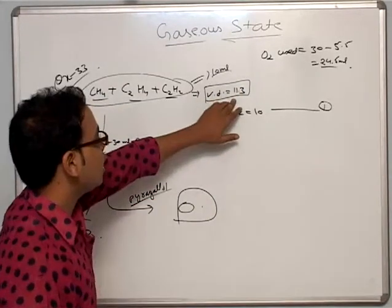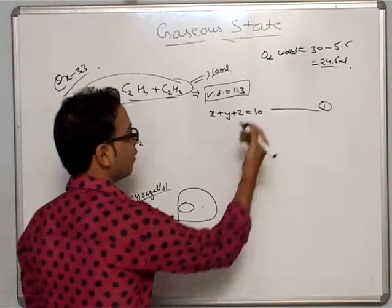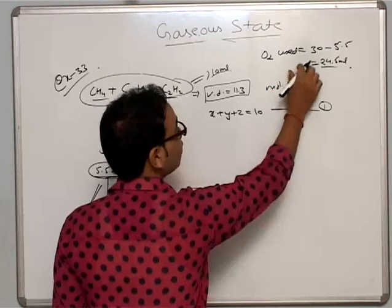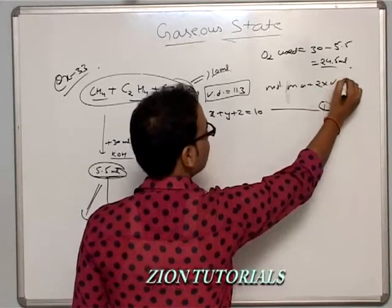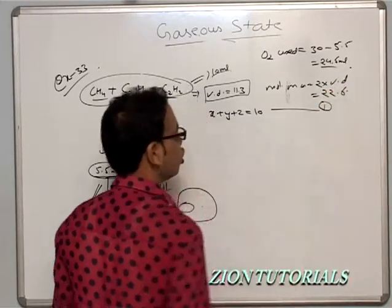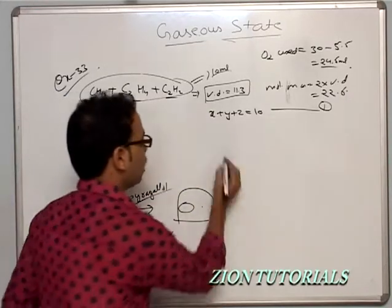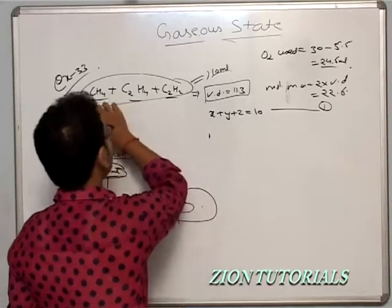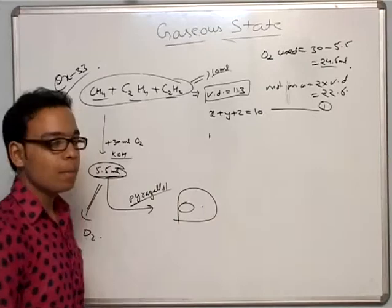Second equation: What is vapor density? Vapor density is 11.3. We can take molecular mass equals 2 times vapor density, so molecular mass of the mixture equals 22.6. Now we can write the weight of CH4 plus weight of C2H4 plus weight of C2H2 equals the weight of the mixture.